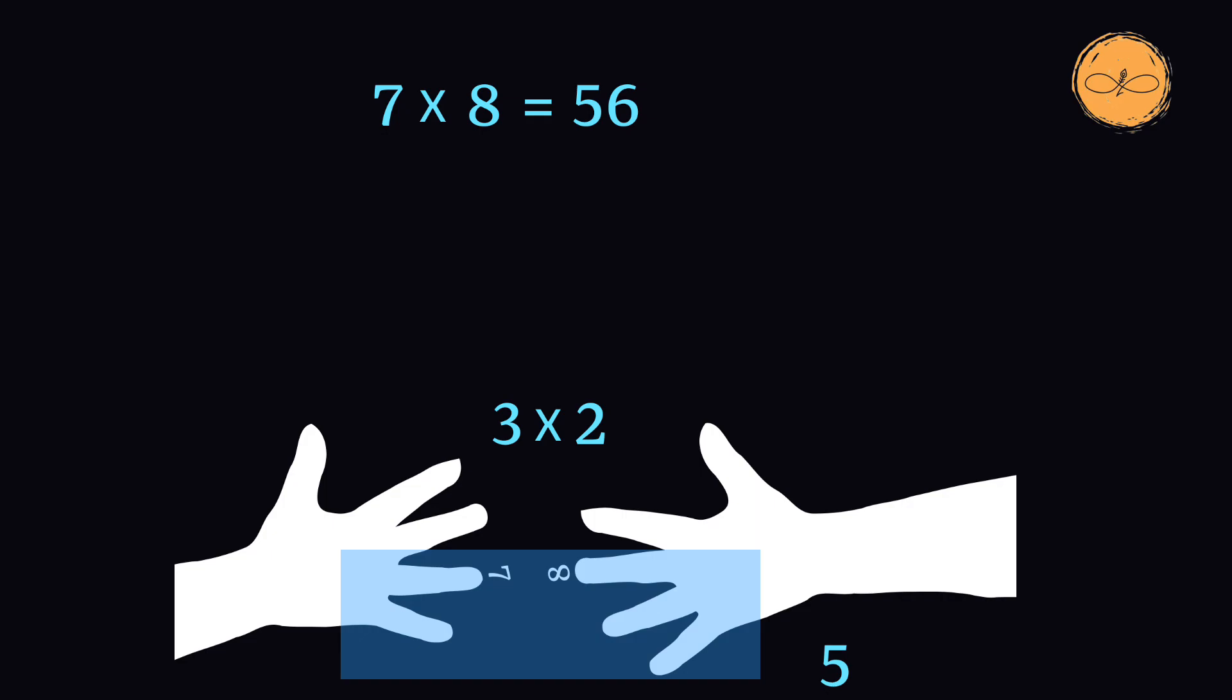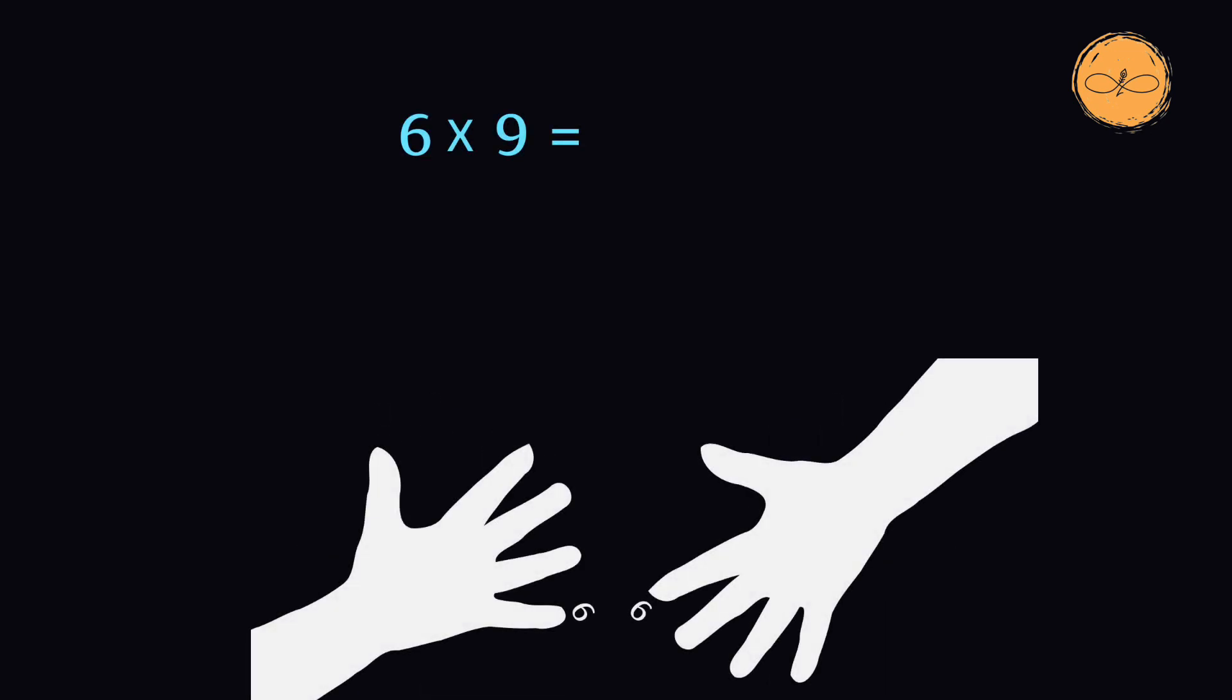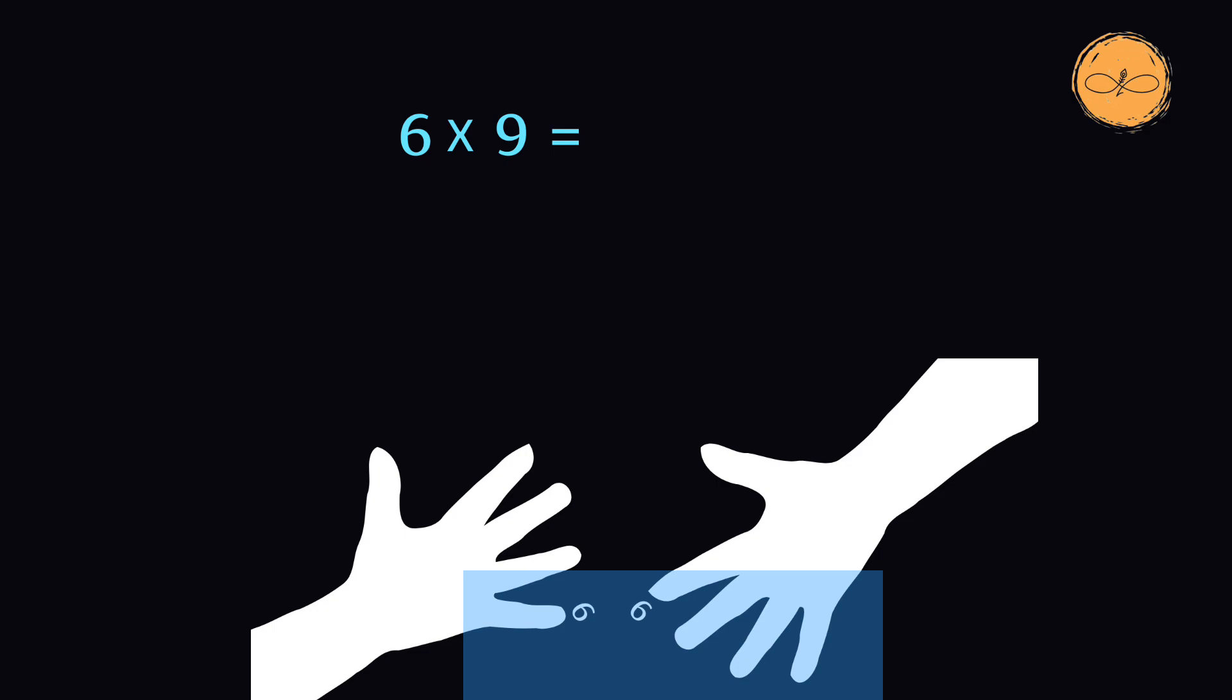You can use this procedure anytime you're multiplying two numbers between 6 and 10. Let's do another example of 6 times 9. We'll rotate our left hand so that we have the number 6 and rotate our right hand to line up the number 9. We now count the number of fingers that are below the fingers that are touching, including the fingers that are touching.